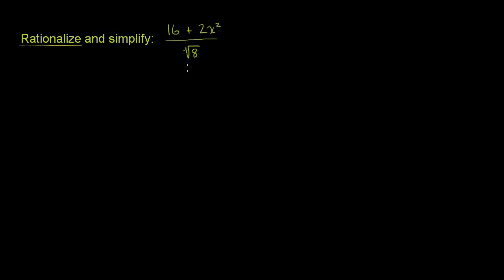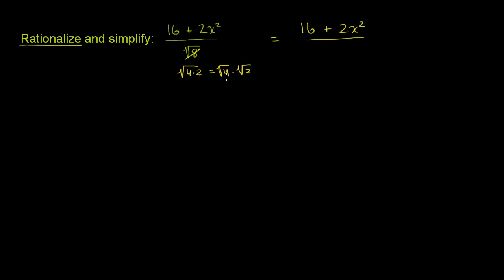The first thing we can do is simplify a little bit and then rationalize. What I'd like to do first is say the principal square root of 8 can be simplified, because 8 is the same thing as the square root of 4 times 2, which is the same thing as the square root of 4 times the square root of 2. So we can rewrite the entire expression: the numerator is still 16 plus 2x squared, all of that over the square root of 4 times the square root of 2. And the principal square root of 4 is just 2, so square root of 8 can be rewritten as 2 times the principal square root of 2.